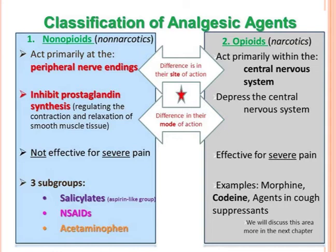So, classifications of analgesics. Right now we're talking about non-opioids, and they act primarily at the peripheral nerve endings, and they work by inhibiting prostaglandin synthesis.